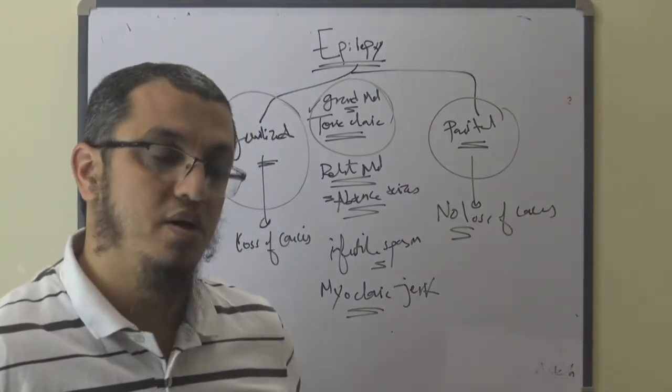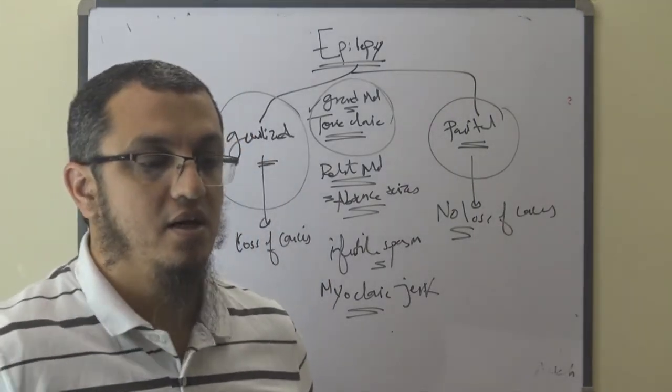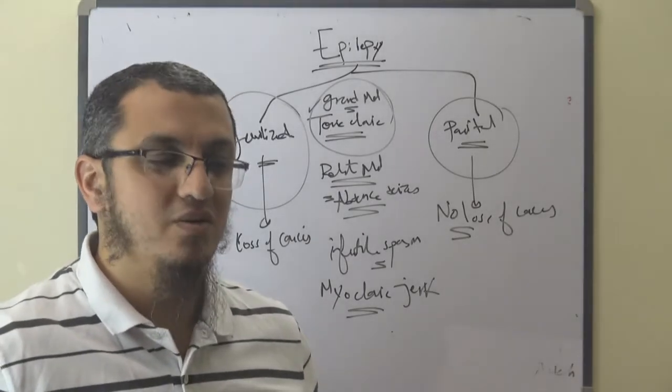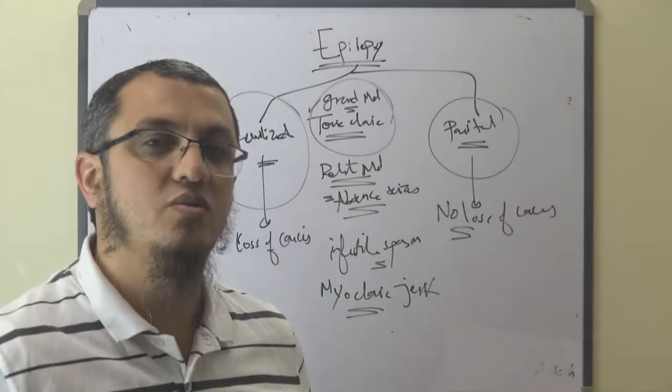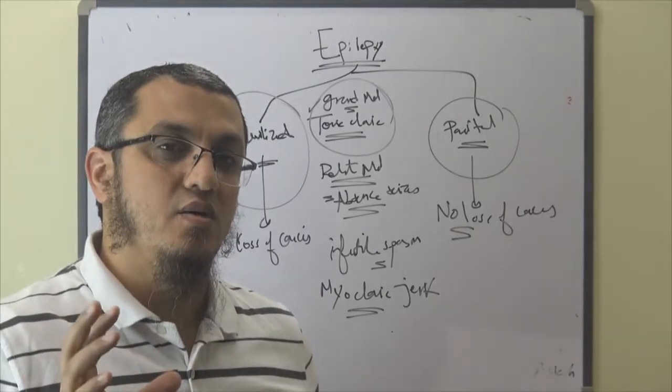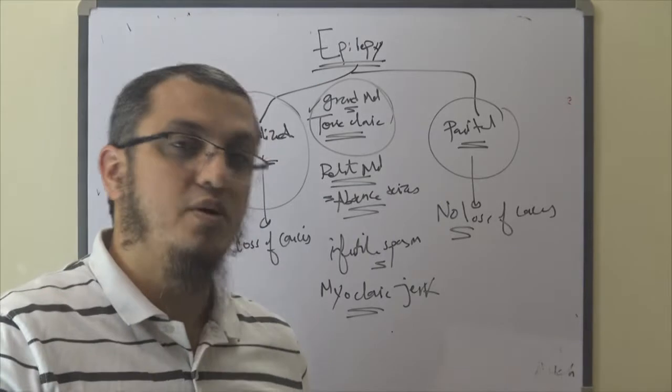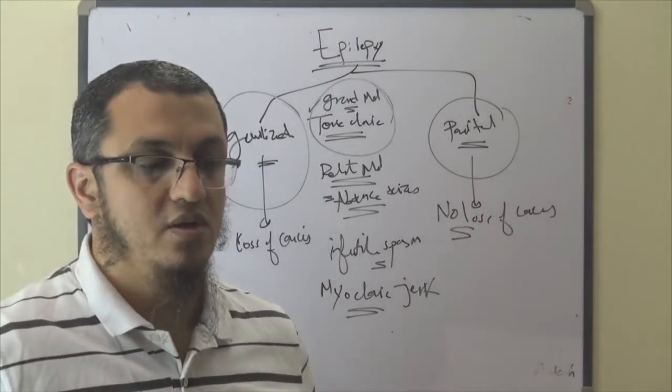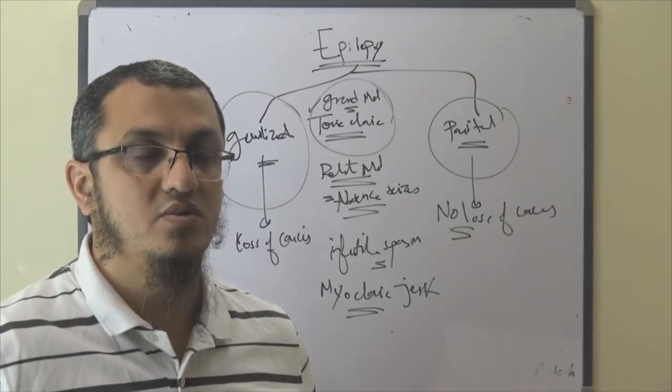If there's a problem in the temporal lobe, it can cause deja vu seizures. Not common, but just to know, a problem in one of the lobes causes deja vu type of seizures. It's called Jacksonian. This is not common.